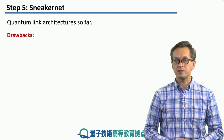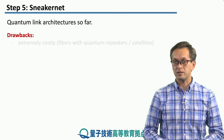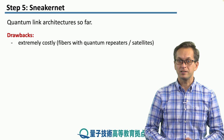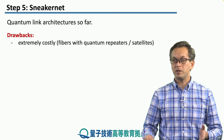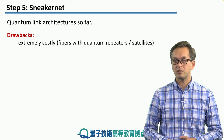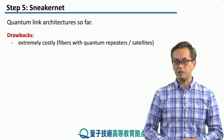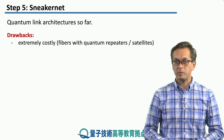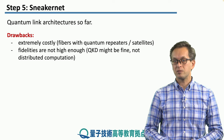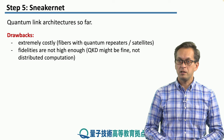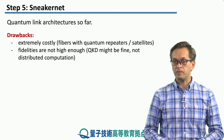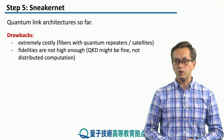But first we're going to discuss the drawbacks of the quantum links we've discussed so far. Even more costly than classical internet are the quantum links — we're talking about fibers with quantum repeaters with BSAs or single photon sources, entanglement sources every 20 kilometers or so along the fiber. Launching satellites into space is also extremely costly. Fidelities of the architectures discussed so far are also not very high; they might be enough for some applications such as QKD but might be too low for more demanding applications such as distributed quantum computation.